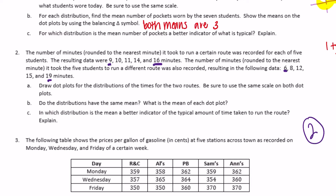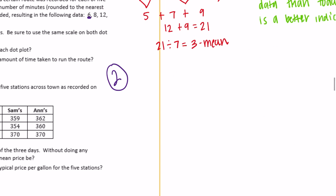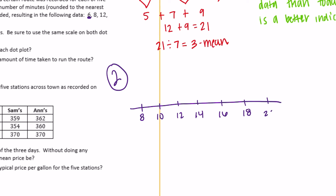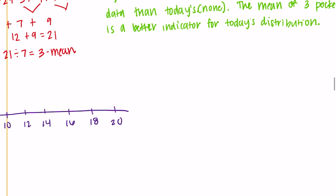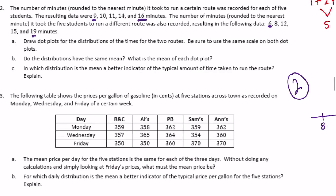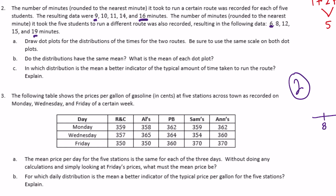We need to use the same scale for both dot plots, ranging from about 6 to 19. Let's go from 8 to 20, counting by twos: 8, 10, 12, 14, 16, 18, 20. Do the same for the second dot plot. Give them titles and a label of 'time in minutes.'